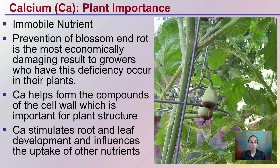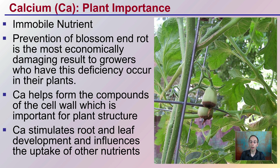To prevent blossom end rot — which is very damaging to growers; you can lose an entire crop despite growing the entire plants — this is why it's of economic importance. Calcium helps form compounds in cell walls, which helps keep their integrity. That's why areas with poor calcium will be soft as well as discolored. Calcium also stimulates root and leaf development and influences the uptake of other nutrients, so more than just calcium, it also influences other things.